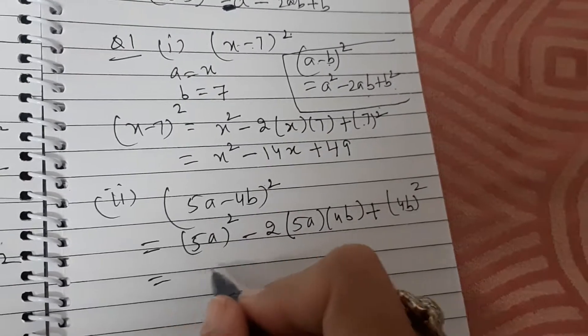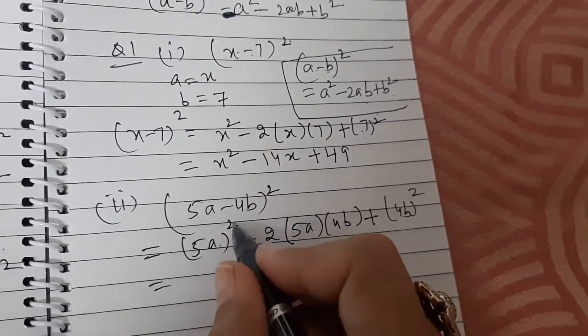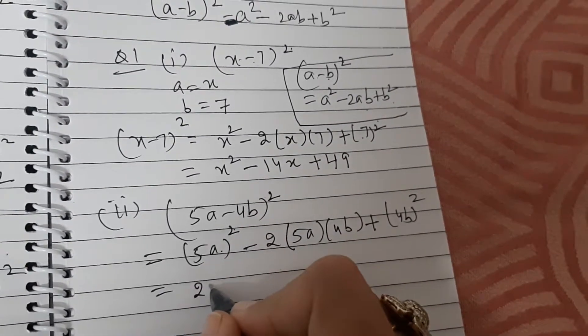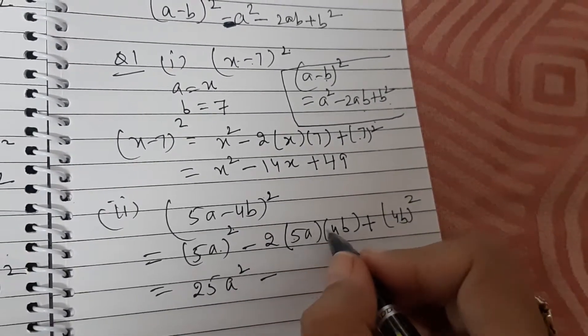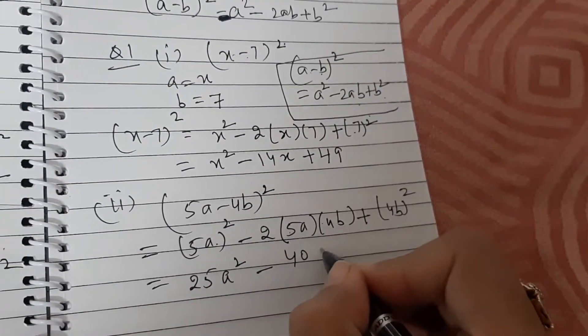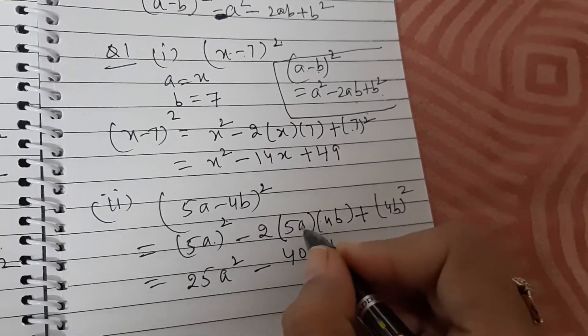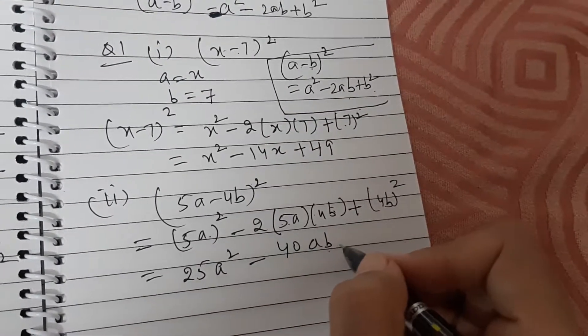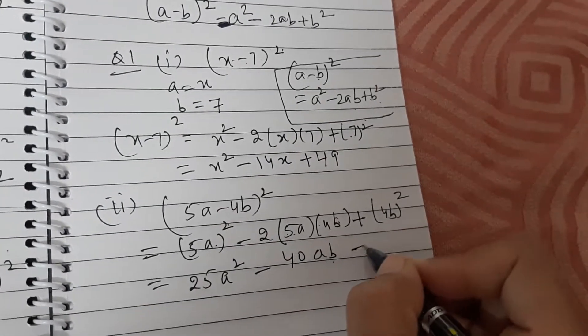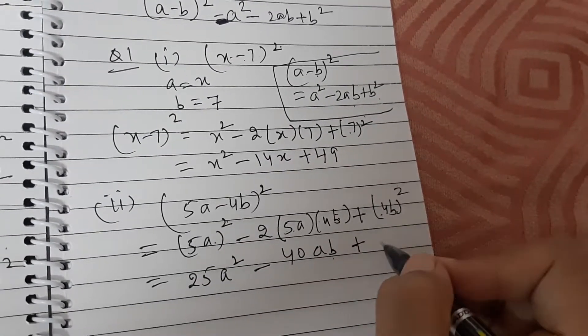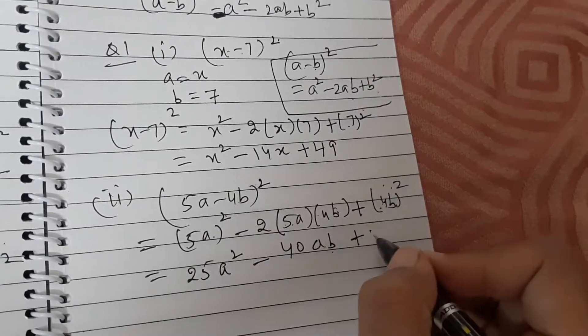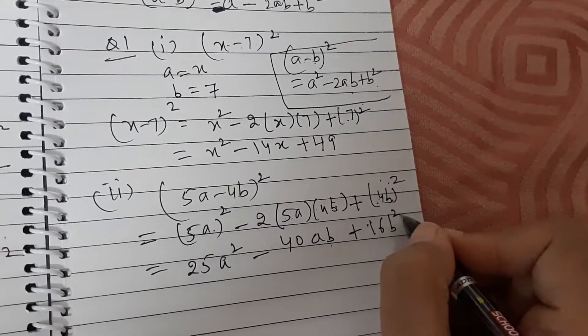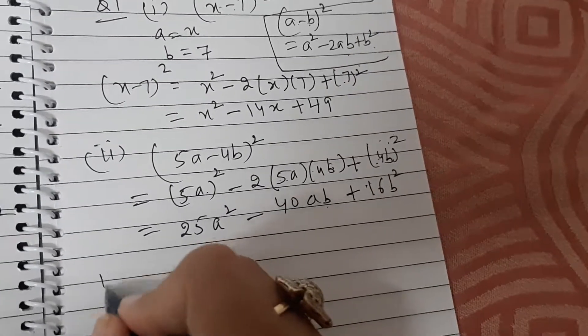Which is equal to—what is 5a whole square? 25a square minus 40ab, product of a and b is ab, plus 4b whole square is 4 square into b square, that is 16b square. Let us quickly do another one.